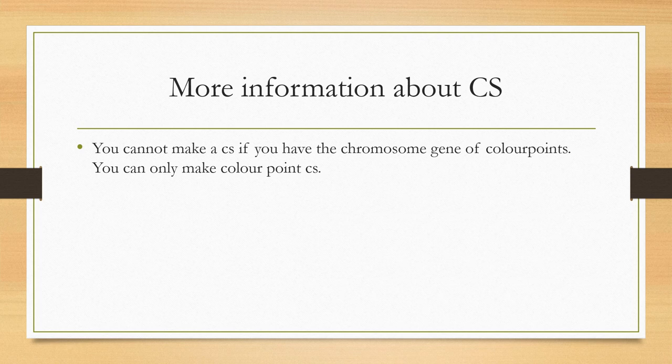Colorpoint is a chromosome, not an allele. You can only make a CS if you have no colorpoint in the pedigree. If you have colorpoint in the pedigree, you make CS by using the colorpoint chromosome gene and produce a colorpoint in the pedigree.